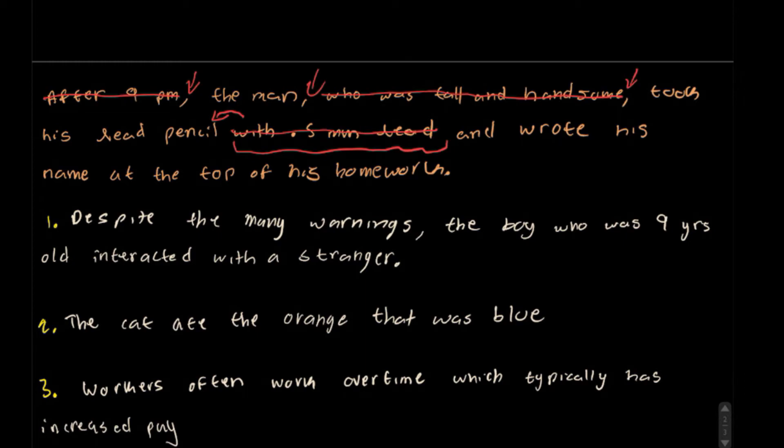So, if we read this again, the man took his lead pencil and wrote his name at the top of his homework. A very simple sentence. However, being scattered with all these relative clauses and comma phrases may be a little bit difficult to understand at the start.